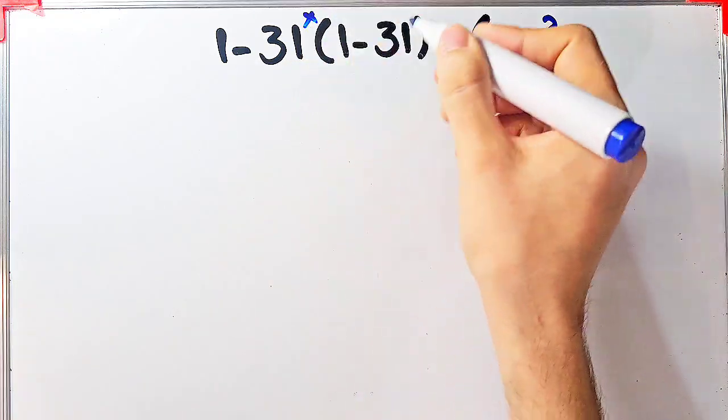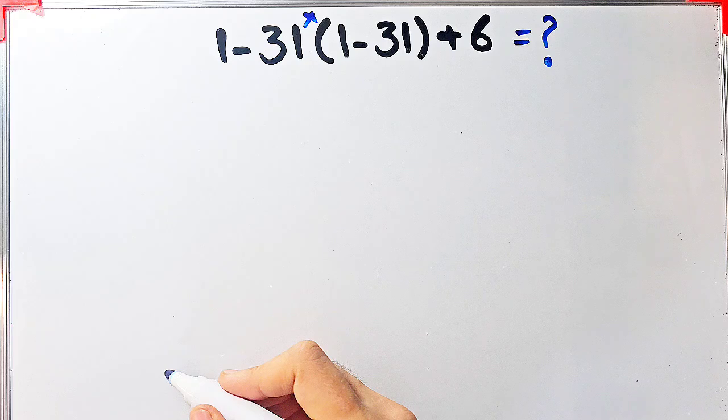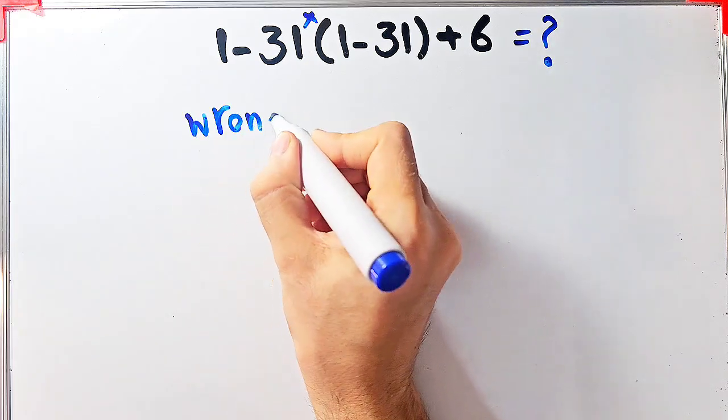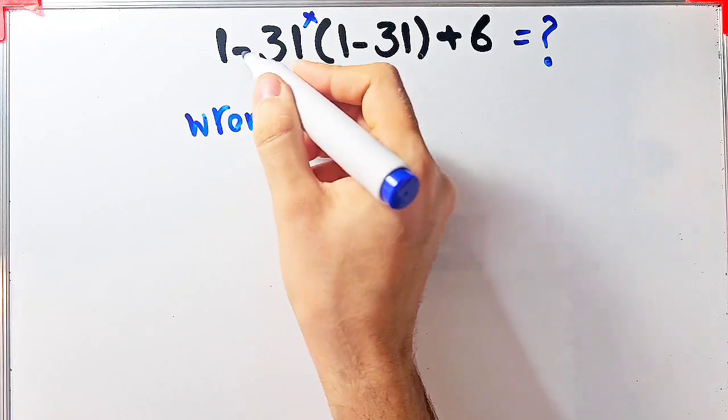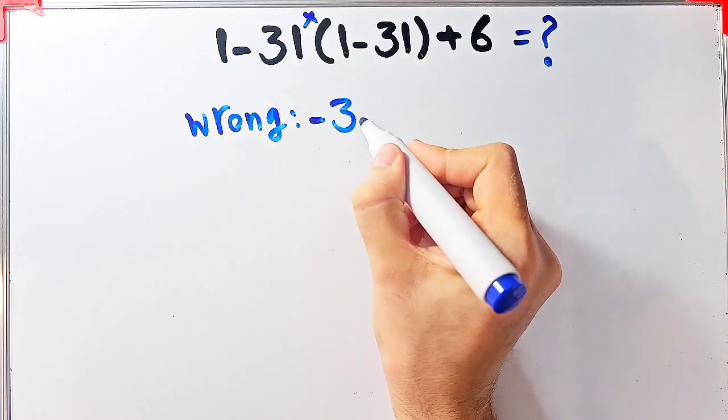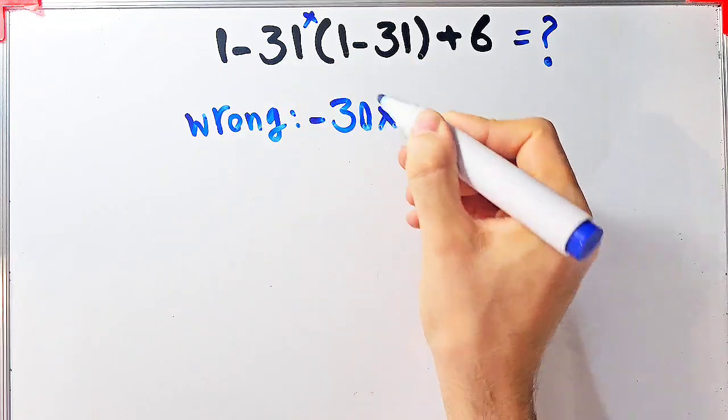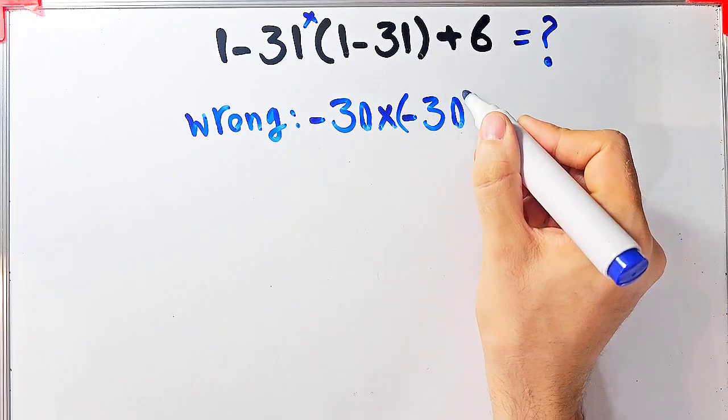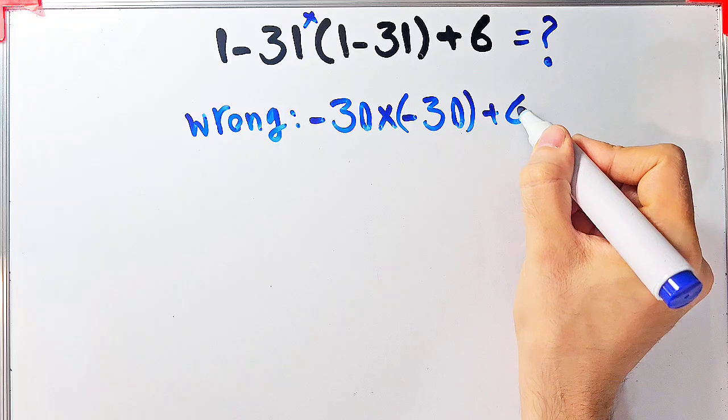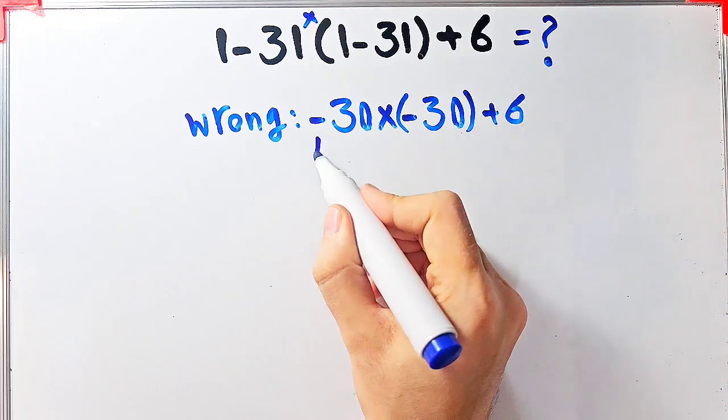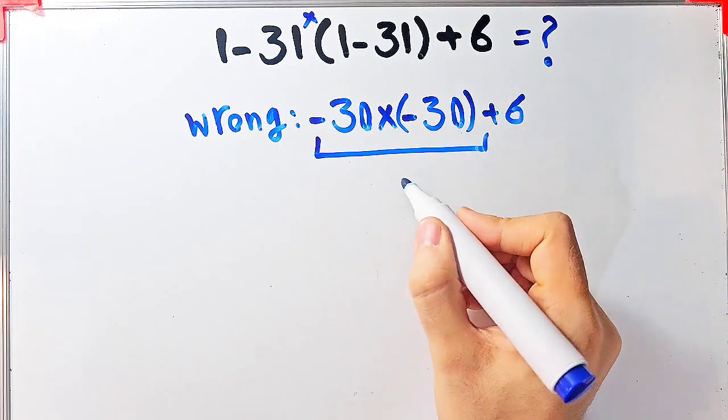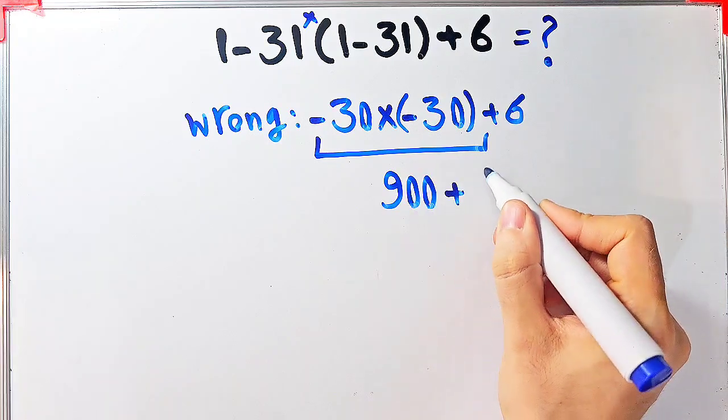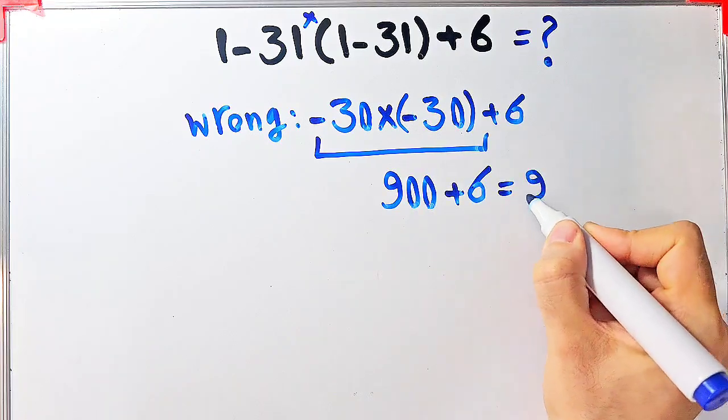Some people solve this question like this: they say 1 minus 31 equals negative 30. Negative 30 times (1 minus 31), which equals negative 30, then plus 6. Again they start from the left and simplify the question. Negative 30 times negative 30 equals 900. 900 plus 6 equals 906, and they say the final answer of this question equals 906.